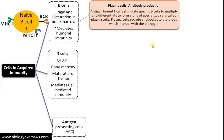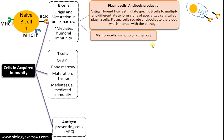Antigen-bound T cells stimulate specific B cells, which multiply and differentiate to form a clone of cells — this is called clonal selection. These later differentiate to form memory cells and plasma cells. Plasma cells secrete millions of antibodies into the bloodstream that interact with the antigen or pathogen and nullify its effects. Memory cells are responsible for immunologic memory — when the same pathogen returns, these cells recognize it quickly and mount a stronger attack.